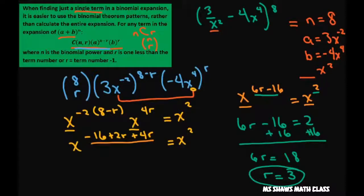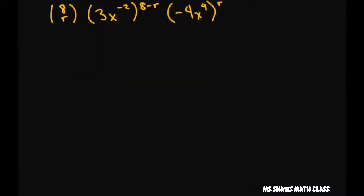Now that we have our r, we can plug it back into this equation and just evaluate. So I'm going to plug in my r. So we have 8 choose 3, 3x to the negative 2 power, 8 minus 3 times negative 4x to the fourth to the third power.